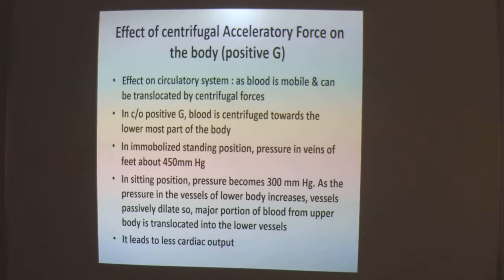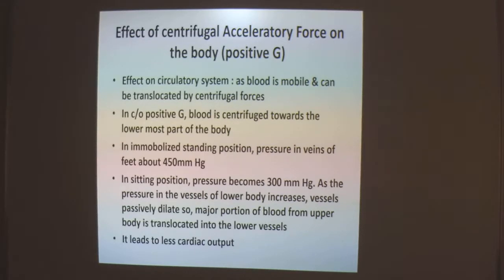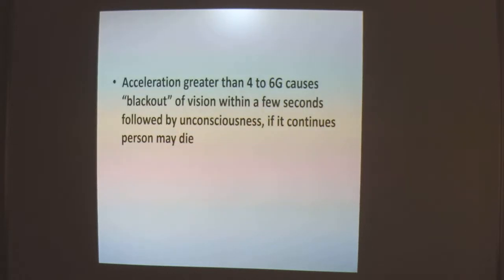While in a sitting position, the pressure becomes 300 mmHg. As pressure in the vessels of the lower body increases, the vessels get passively dilated, and a major portion of blood from the upper body is translocated into the lower vessels. Since cardiac output depends on venous return to the heart, less venous return results in less cardiac output. Acceleration greater than 4 to 6G causes a blackout of vision within a few seconds, and if it continues further, unconsciousness leading to death.